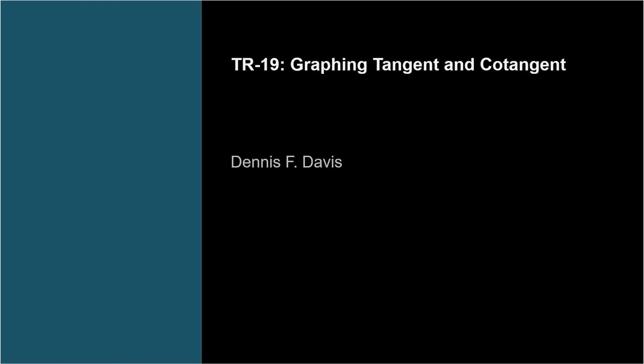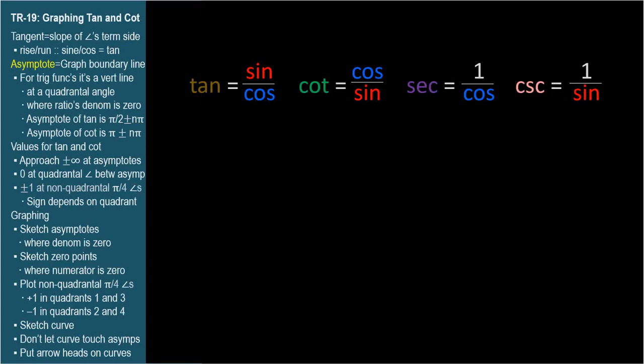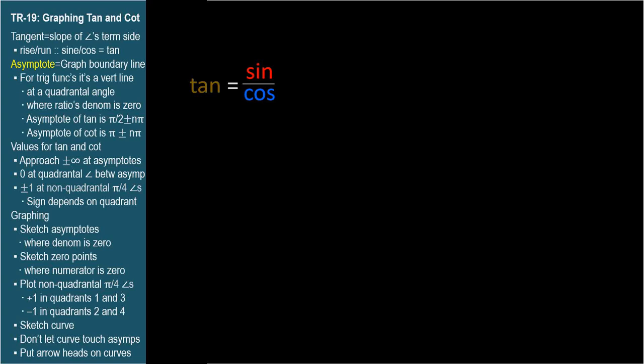There are four trig functions left to graph. In this video, we'll graph the tangent and cotangent functions. Tangent is a little special and useful because its formula, sine over cosine, exactly corresponds to the formula for slope, which is rise over run.